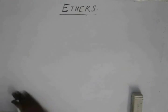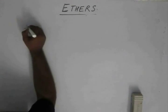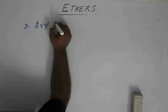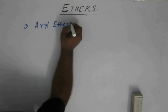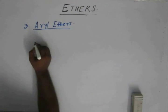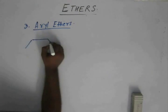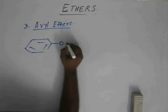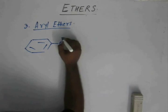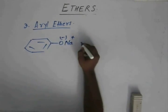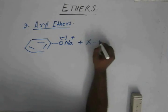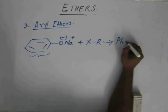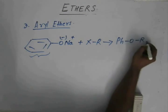We have seen methods of preparation of aliphatic ethers. Now let us take up a process for preparation of aryl ethers. In this we take sodium salt of phenol plus an alkyl halide, and we are left with Ph-O-R, where Ph represents the phenyl group.